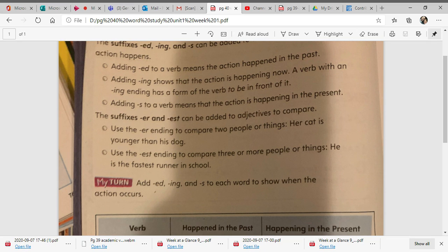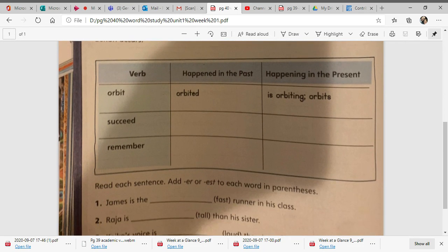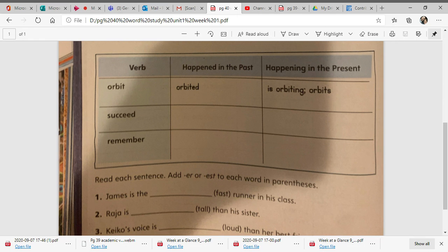Add ed, ing, and s to each word to show when the action occurs. So if you look at your chart down at the bottom of page 40, you have your verb with orbit, succeed, and remember. Then you have a box where happened in the past and a box where happened in the present.